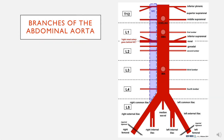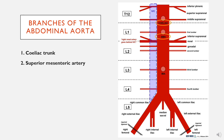In terms of the overall branches: the celiac trunk comes off at about T12 to L1, the superior mesenteric artery comes off at L1, and the inferior mesenteric artery comes off at L3.